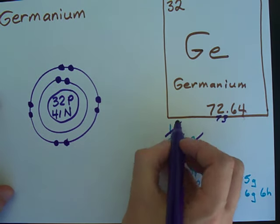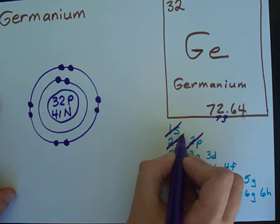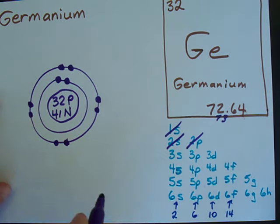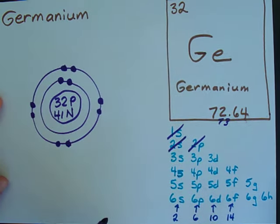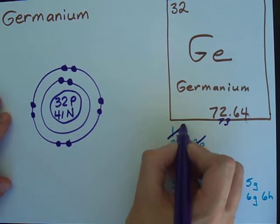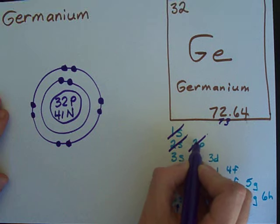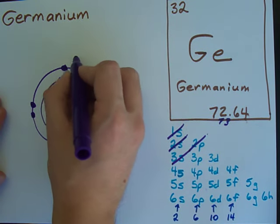What I'm doing is progressively drawing diagonal lines through my chart, and it's going to tell us the order in which we put electrons into the atom. So, 2 into the first, 2 into the second, 6 into the second, 2 into the third.